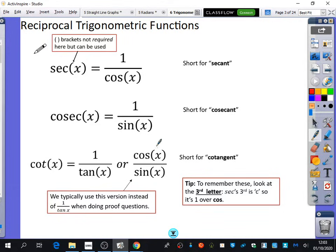And cot x is 1 divided by tan x or cos x over sine x. We often use this version, the 1 over tan x, because it tends to be a bit more useful. When we do proof questions, it tends to be useful to have things with cos x and sine x rather than 1 over tan x. But why is this the reciprocal of tan? Because tan is usually sine over cos, so when we take the reciprocal of that, with fractions you just flip them over.